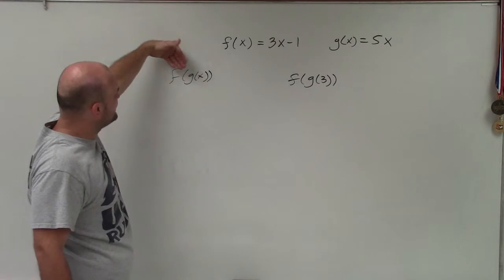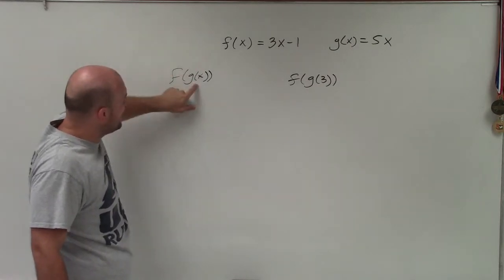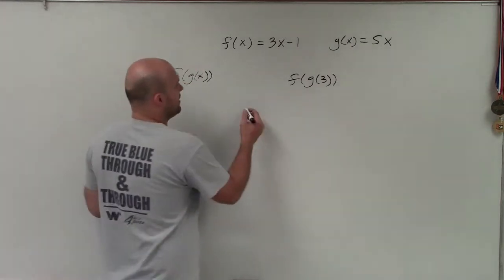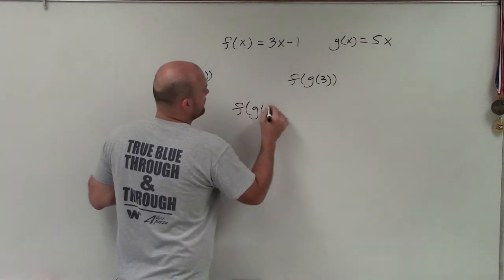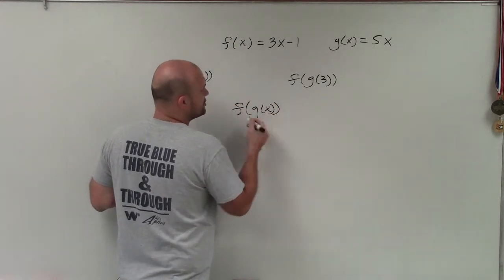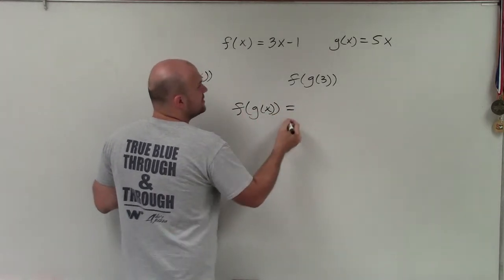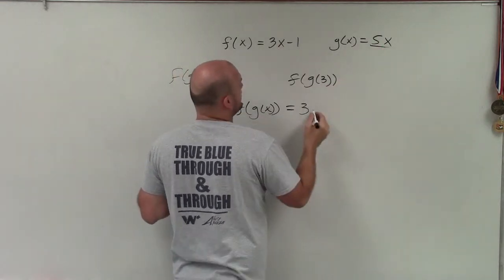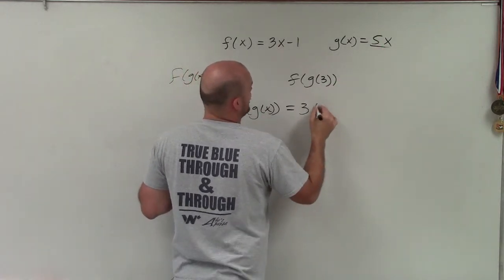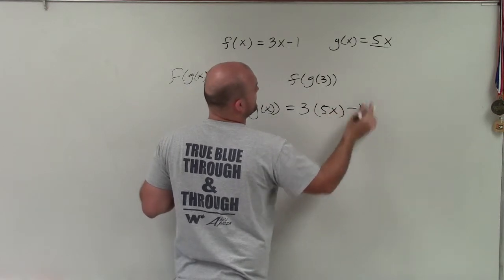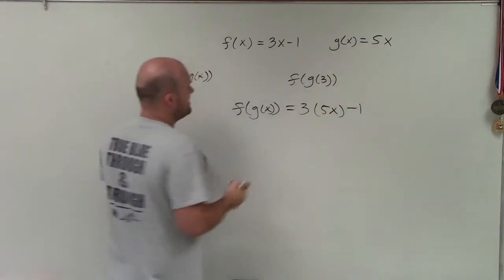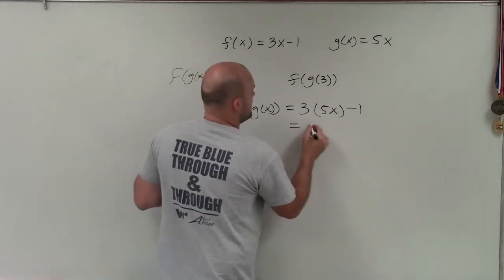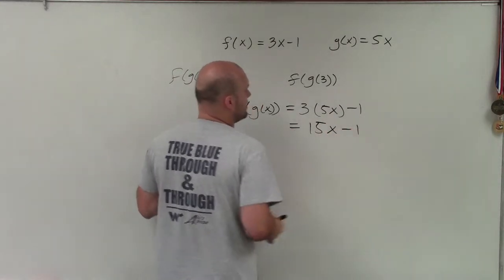What I'm trying to do is compose the functions, and then I'm going to evaluate for my g of x function. One way to do it is just to determine the composition. When determining the composition, I'm just going to take 5x and plug it in for x. So I have 3 times 5x minus 1. That's what f of g of x means — you're taking the g of x function and plugging it into the f of x function. That gives me 15x minus 1.